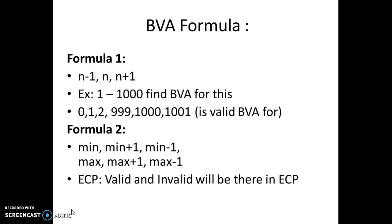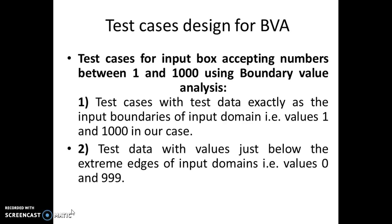For example, for a class of 1 to 1000, the boundary values are: N = 1 (lower), N = 1000 (upper), N minus 1 = 0, and N plus 1 = 1001. Another way to express this uses minimum and maximum: valid boundary values are minimum, minimum plus 1, maximum, and maximum minus 1, while invalid values are minimum minus 1 and maximum plus 1.